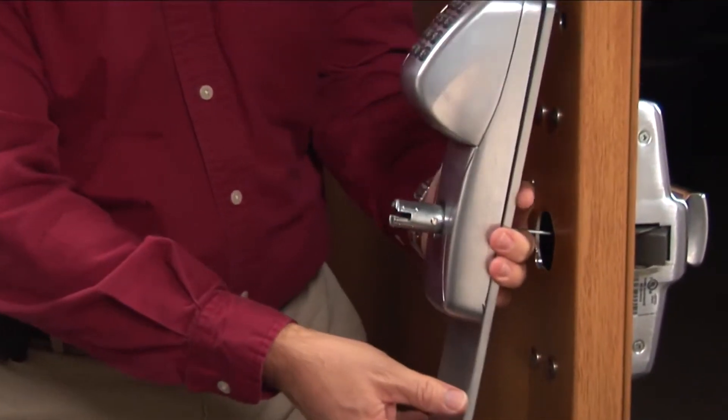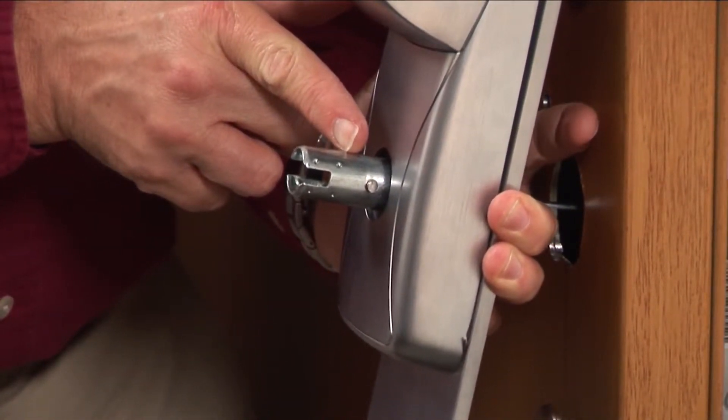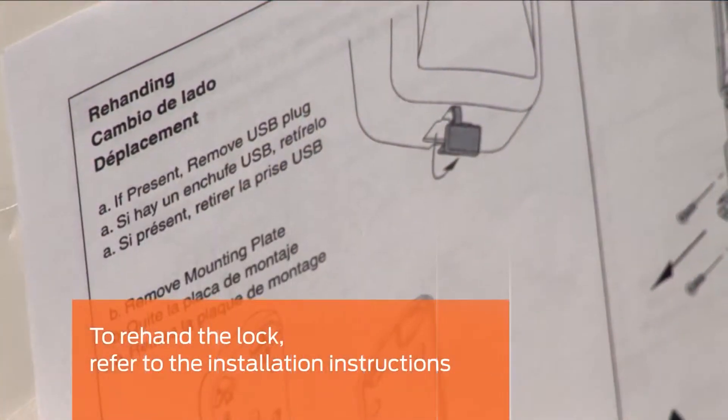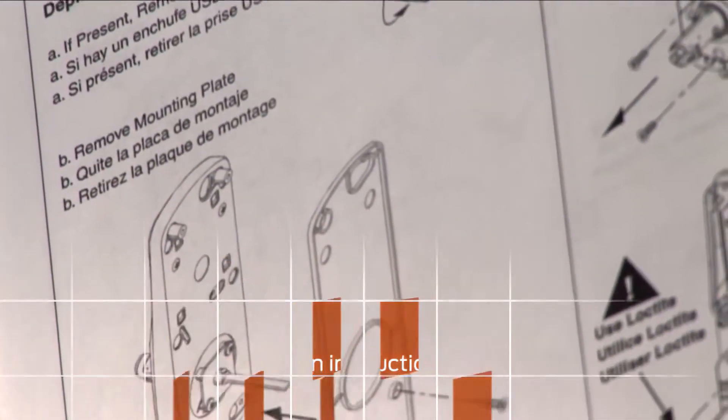Check the handing of the outside assembly. The knob stop pin should be pointing toward the latch edge of the door. If the handing is not correct for your opening, re-hand it now according to the installation instructions.